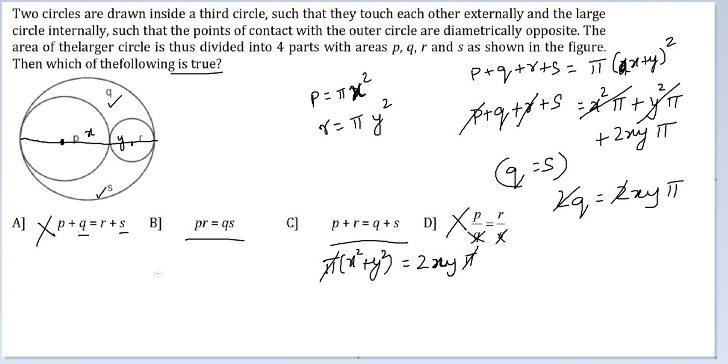Let's look at this. P into R would be pi squared X squared Y squared. LHS is this. What would be Q squared? Q is equal to XY pi.